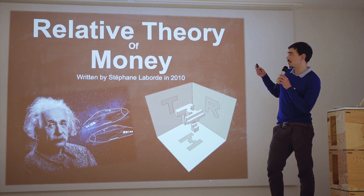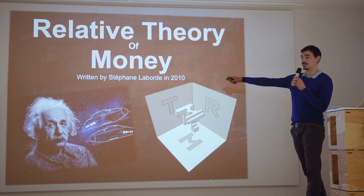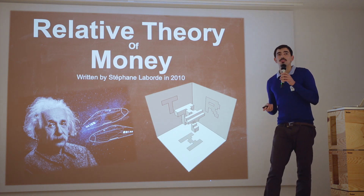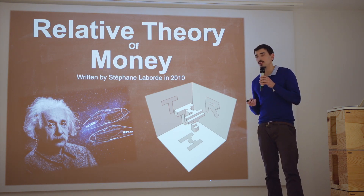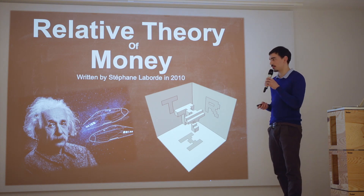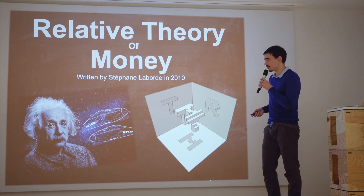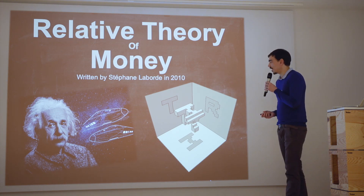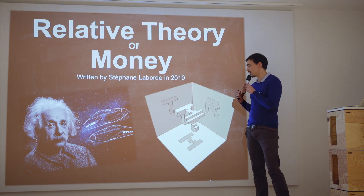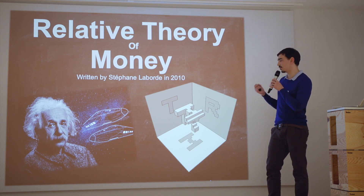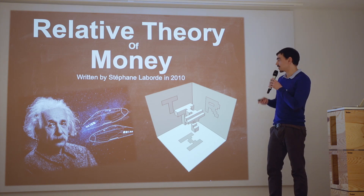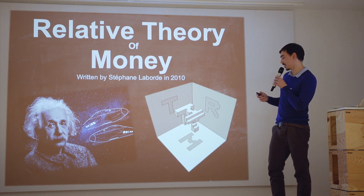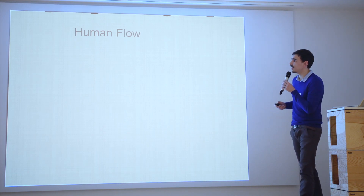The background we have is a discovery made by a French mathematician called Stéphane Laborde in 2010. He wrote the Relative Theory of Money, which is a very scientific approach to the problem of money. I really advise you to get to know more about this topic because it's really interesting. The goal of this theory is to apply the concept of relativity to money itself and to find a mathematical object that could be invariant inside our economy.